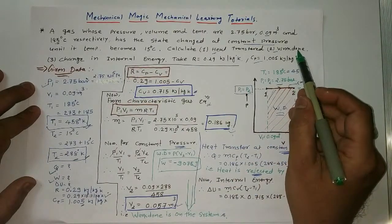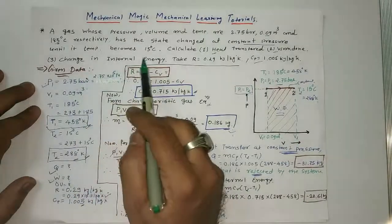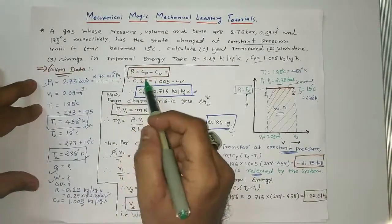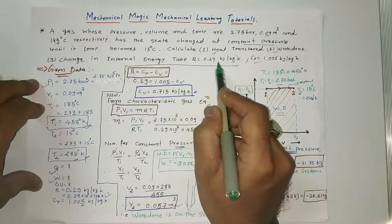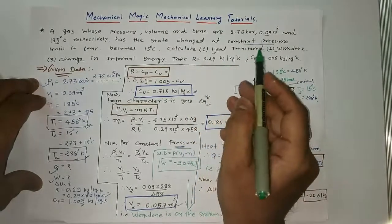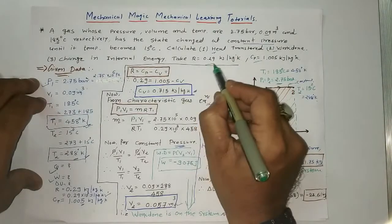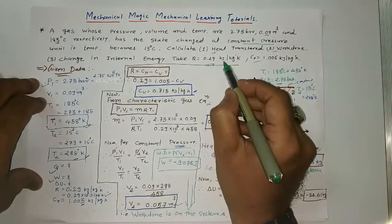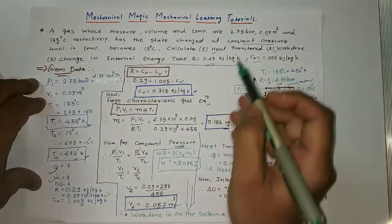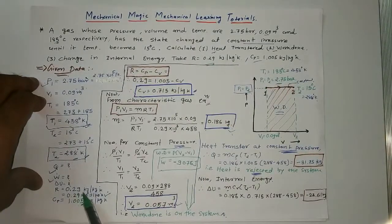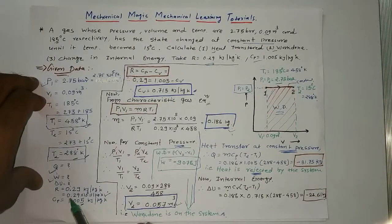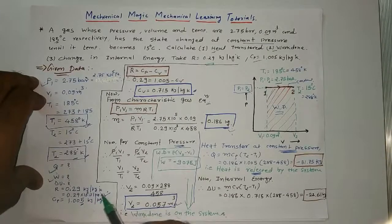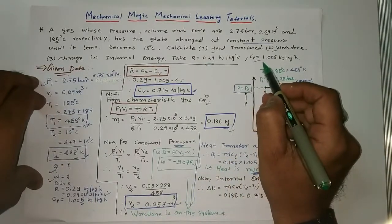Additional data is also given: R is equal to 0.29 kilojoule per kg Kelvin. Converting R into joule per kg Kelvin gives 0.29 into 10 raised to 3 joule per kg Kelvin. The value of Cp is given as 1.005 kilojoule per kg Kelvin.